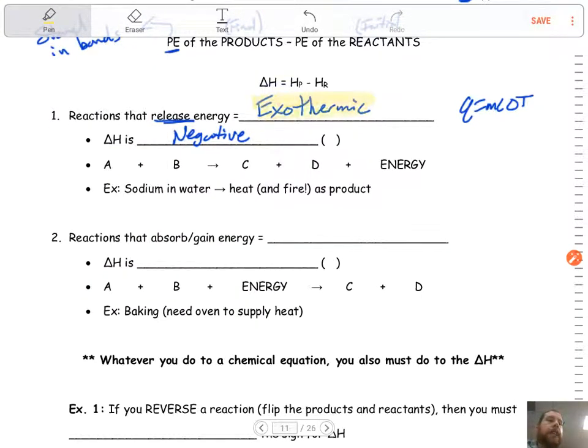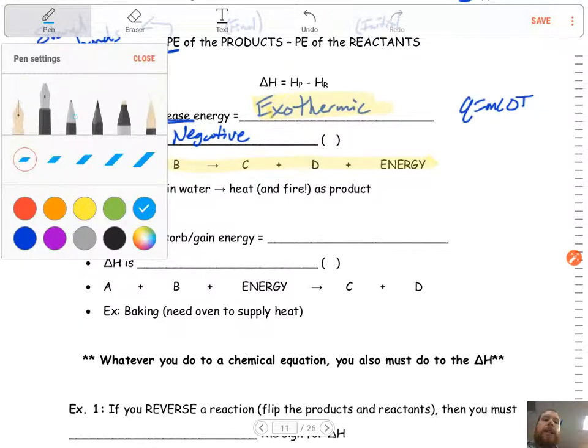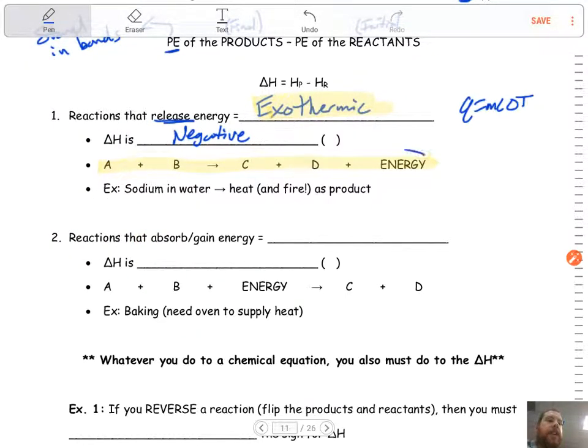So if we were to write this out in terms of a reaction, so exothermic there, this is what it would look like. Energy is a product. Energy is a product, it's going to be on the right-hand side of the arrow.